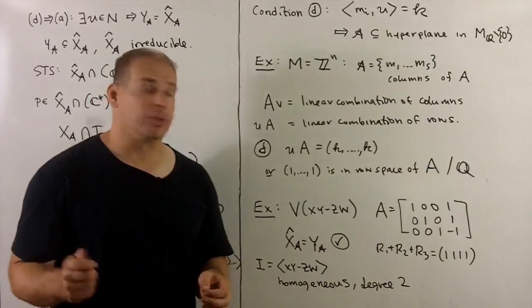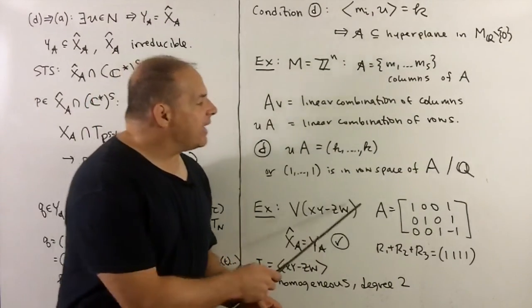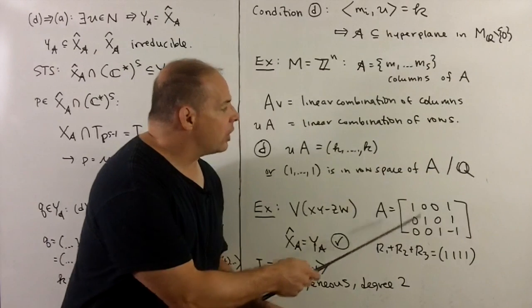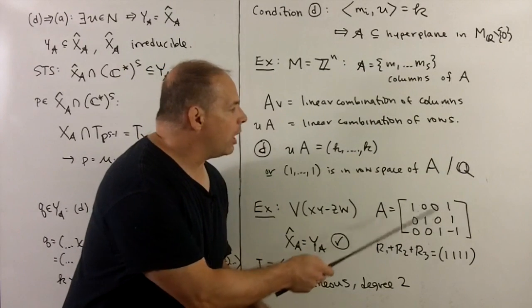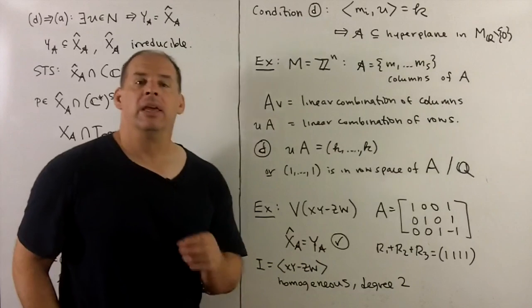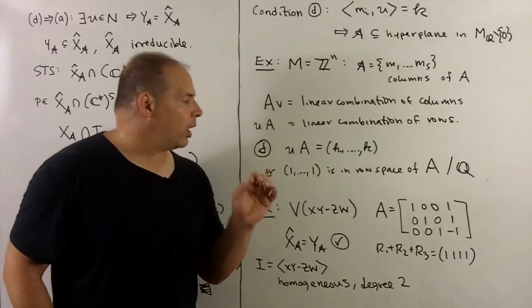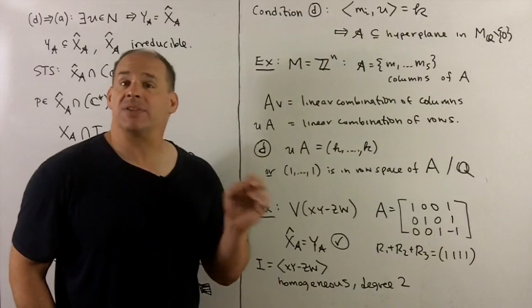Let's look at some examples. If we take A equal to [1,0,0; 0,1,0; 0,0,1; 1,1,-1], if I add up the rows, we get (1,1,1,1). And so this satisfies condition D.